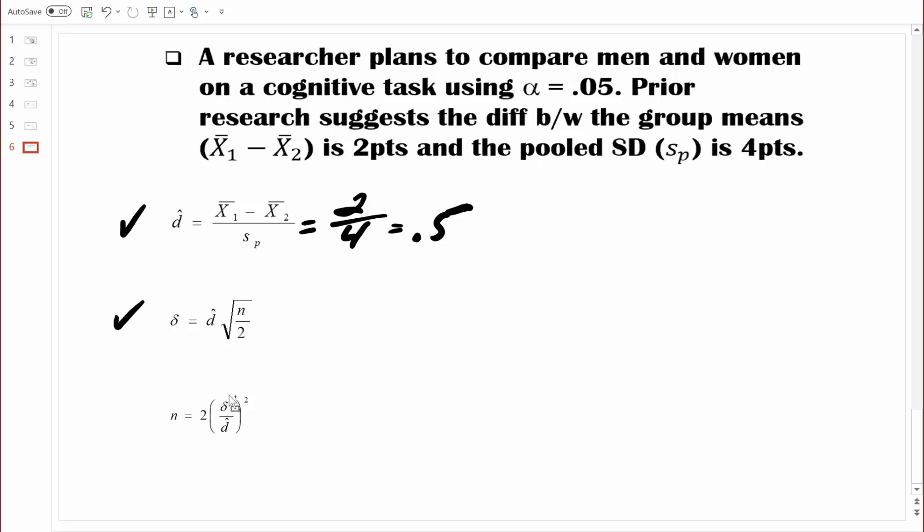So the first thing you would do is consult a formula sheet. And you would find that this formula right here is the most appropriate formula for computing delta when we're comparing two completely independent groups. Remember, delta is known as the non-centrality parameter. Delta is always based on the effect size, Cohen's D, and also the sample size, N. We know the effect size, we just computed it, and we also know the sample size. There were 32 people in each group. So we have all the information that we need to compute delta. Let's go ahead and do that.